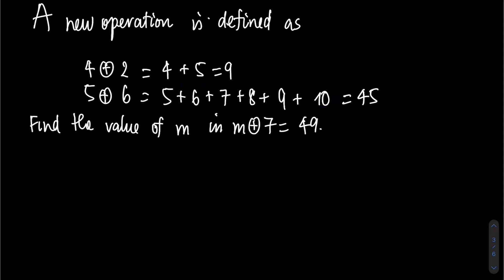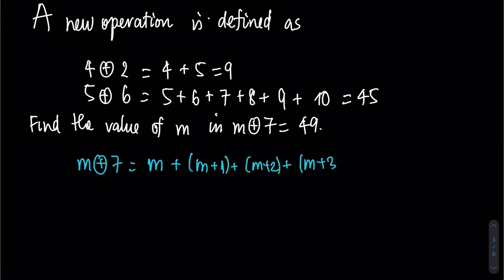By using this, we have M plus circle 7, which we need to start by M and write 7 terms including M, which is M, plus M plus 1, M plus 2, M plus 3, M plus 4, M plus 5, and finally M plus 6. We have 7 terms including M.